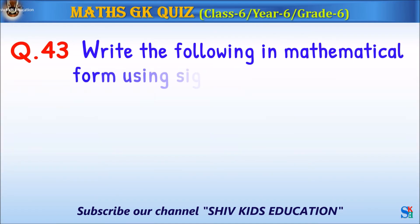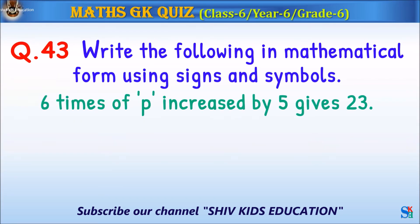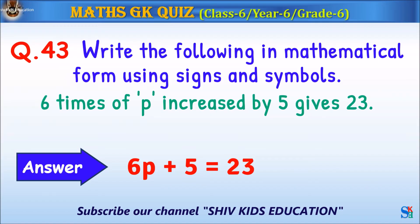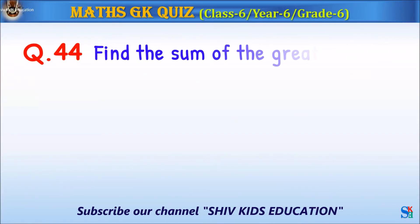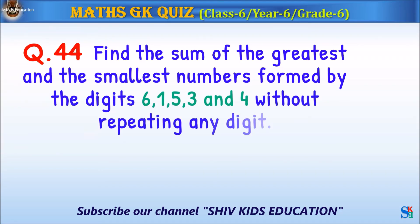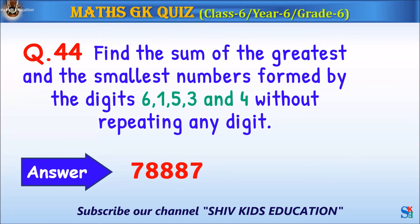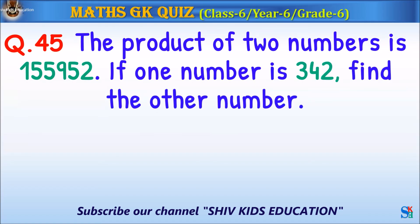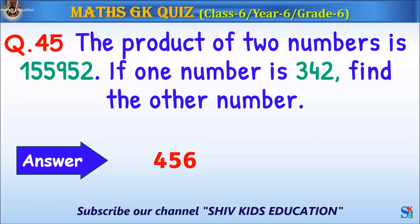Question 43: Write the following in mathematical form using signs and symbols. The answer is 6p plus 5 equals 23. Question 44: Find the sum of the greatest and smallest numbers. The answer is 78,887. Question 45: The product of two numbers is 155,952. If one number is 342, find the other number. The answer is 456.